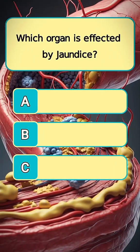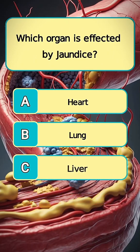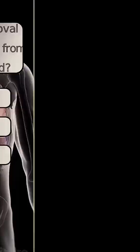Which organ is affected by jaundice? Answer C. Liver.